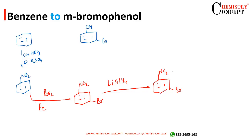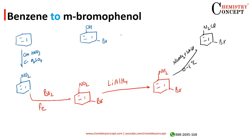After this, treat it with NaNO2 plus 2HCl at 0 to 5 degrees Celsius. We will get a diazonium salt. This diazonium salt on reacting with water will give us phenol, and we will get meta-bromophenol. A tricky but very important conversion for the board exams.